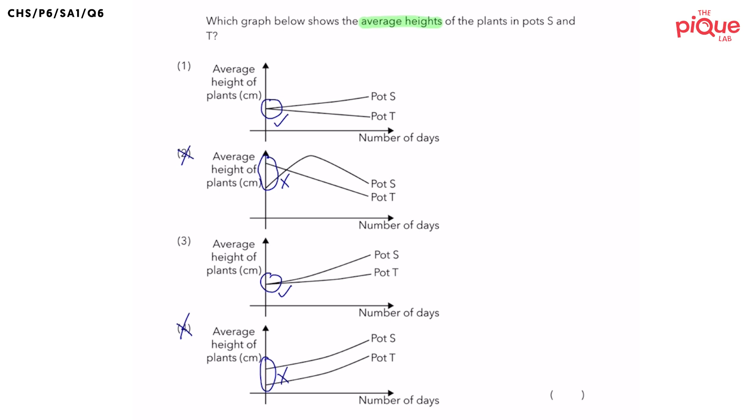So now we are left with options one and three. And we also have to look at how the average height of the plants in pots S and T change over the two weeks since they were planted. What do you think should happen to the height of the plants?